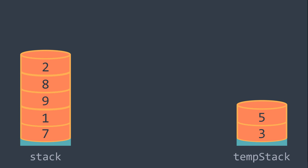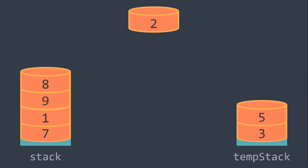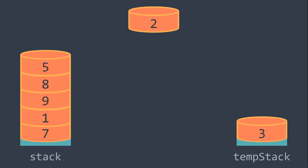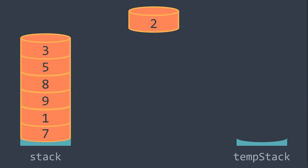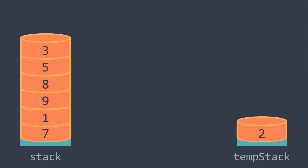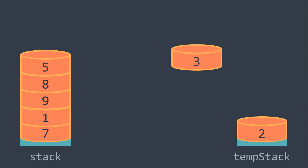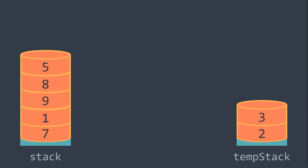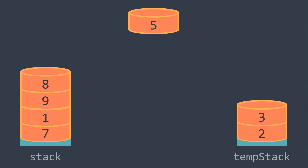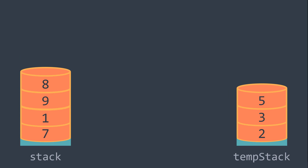Now we pop value 2: because 5 is greater, we take it to stack, same thing for 3. Now we can push our 2, and we repeat. We pop value 3 — it's not smaller than 2, we directly push it. We pop value 5 — it's not smaller than 3, we directly push it.